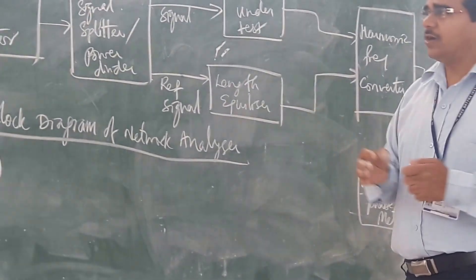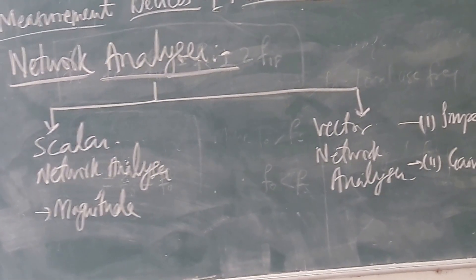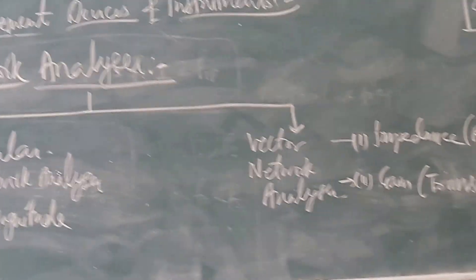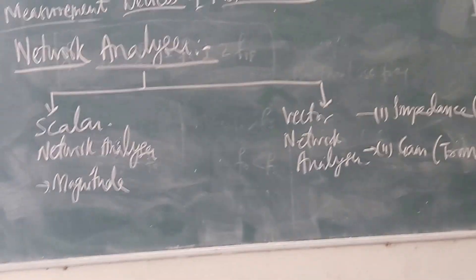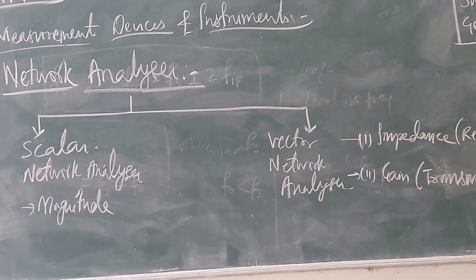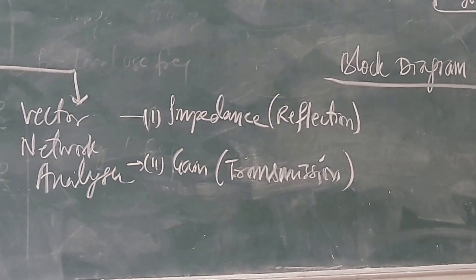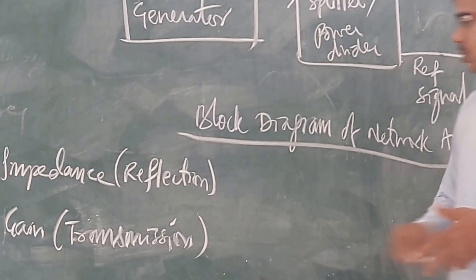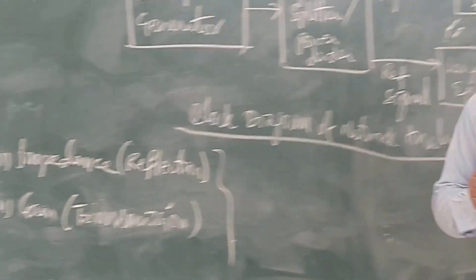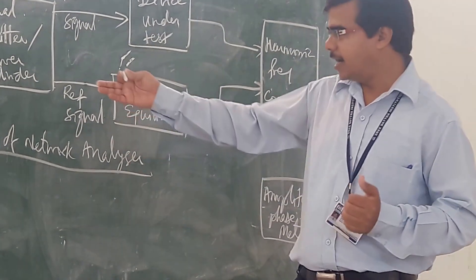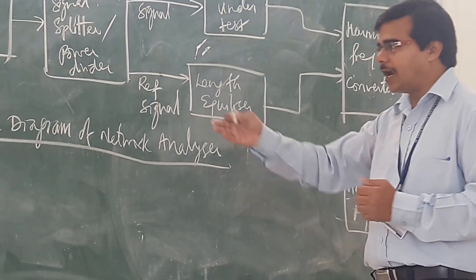If you are going for a scalar network analyzer, there we can measure the magnitude — the parameter magnitude. On the other hand, if you are going for a vector network analyzer, there we can measure the impedance and gain. So apart from magnitude, we can also see the impedance and the gain of the microwave frequency signal. The impedance means the reflection characteristics and gain means the transmission characteristics of the microwave frequency signal.